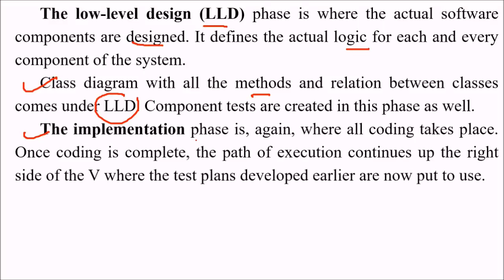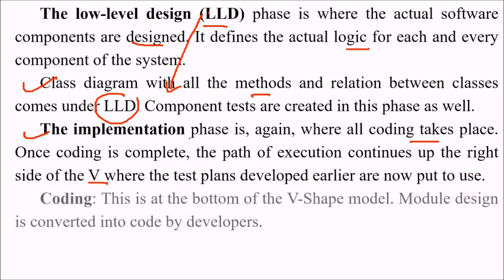The implementation phase is where all the coding takes place. The low level design corresponds to the component test. In the implementation, once coding is complete, the path of execution continues up the right side of the V where the test plans developed earlier are now put in use.